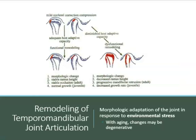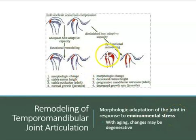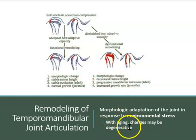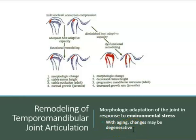Lastly, the TMJ does get remodeled throughout life because it is a heavily used joint. Environmental stressors like bruxism, grinding, and clenching can damage the TMJ or cause it to not work as well. Cells around this area help remodel and fix it. However, with aging, changes can become degenerative, and the joint may not heal as effectively.